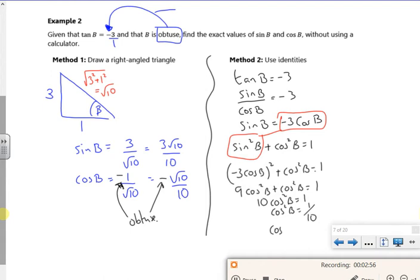Cos B is 1 over root 10, which is your root 10 over 10. And then make sure it's negative, because it's obtuse.